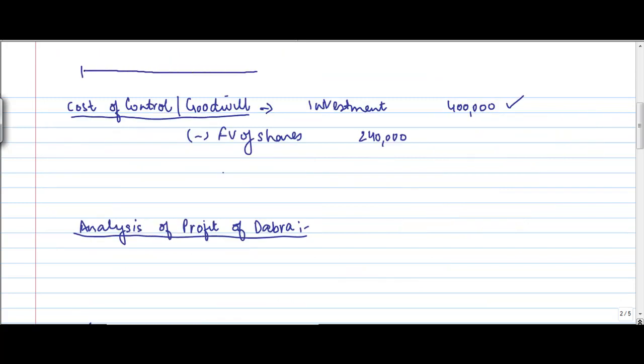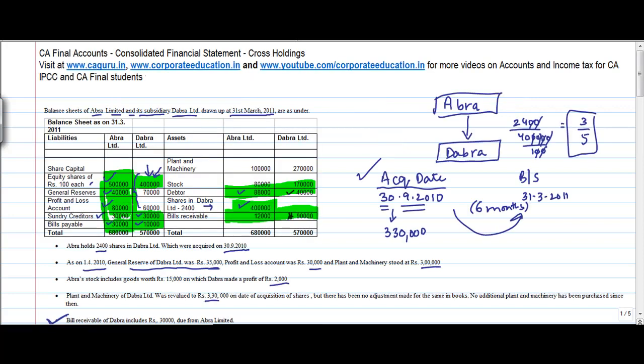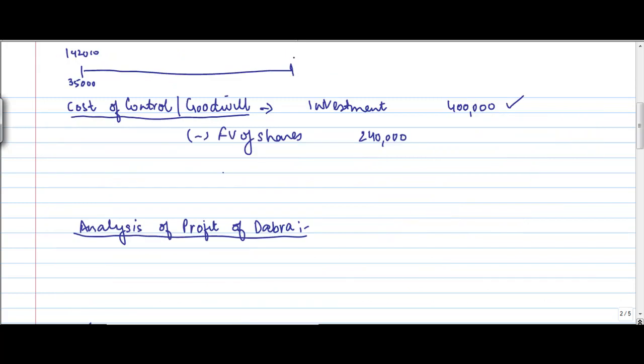Now general reserve of Dabra Limited is 70,000. And what we are told is that as on 1-4-2010, the general reserve of Dabra Limited was 35,000. So let's see this. Now, there are three dates. One is 1-4-2010, when the value of the general reserve was 35,000. Right? This is the value which was given here. Then we are sitting today, when it is 70,000. So you have 31-3-2011, when this is 70,000. So definitely, this part of the general reserve is pre-acquisition. Why? Because the acquisition happened on 3-9-2010. So if you see the general reserve, pre-acquisition. Right? So this is a pre-acquisition general reserve that you have, or you can write this as capital reserve.